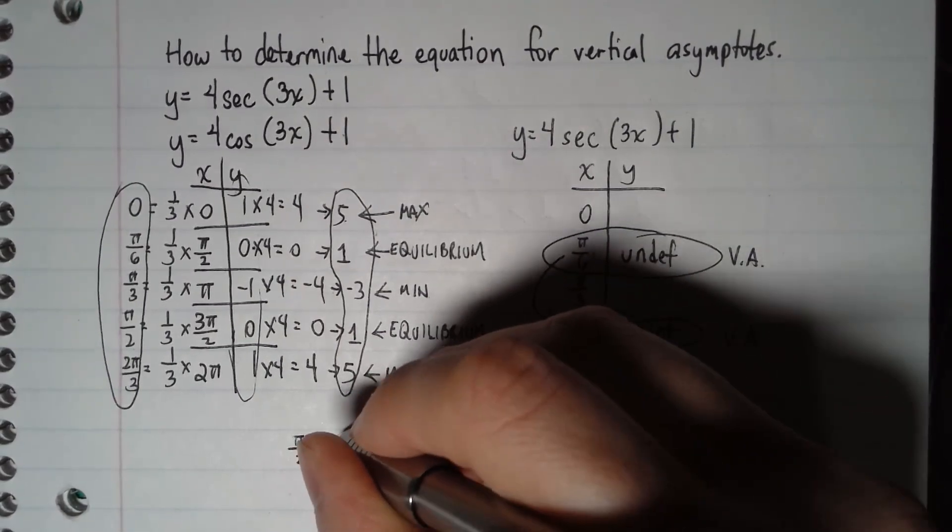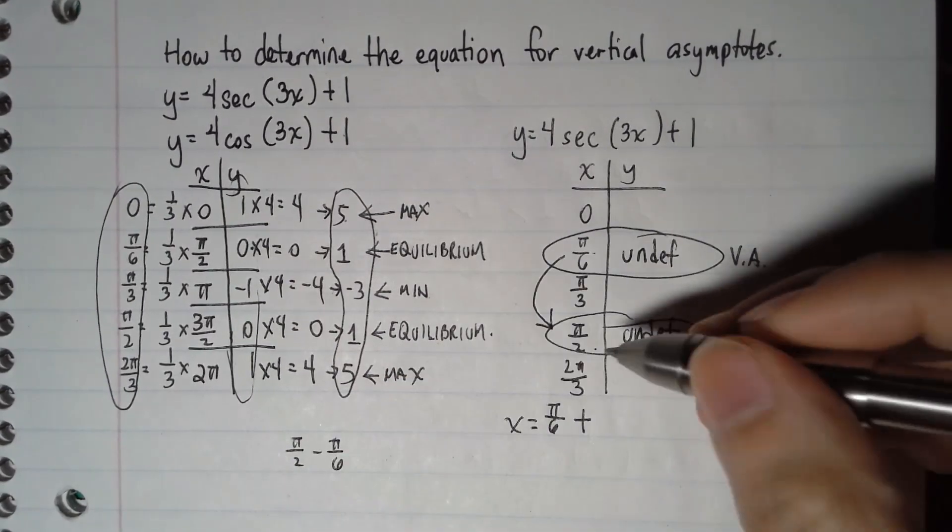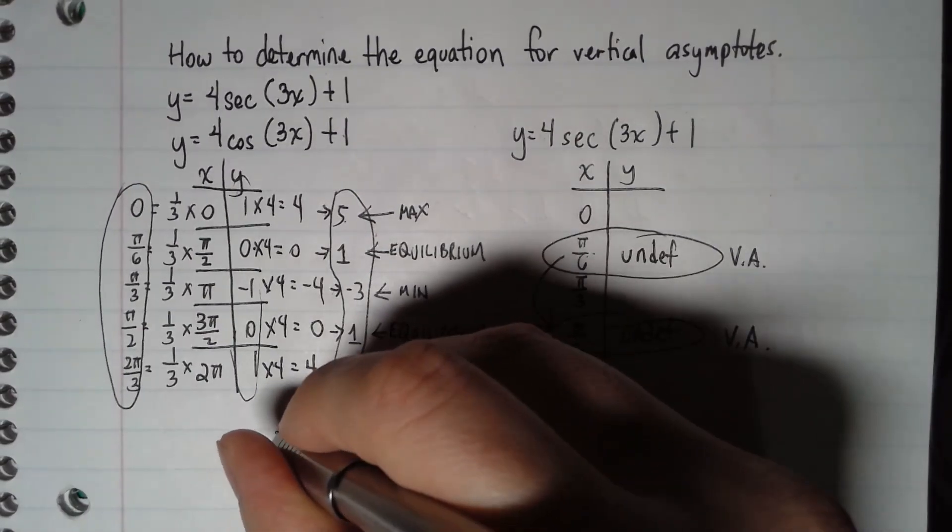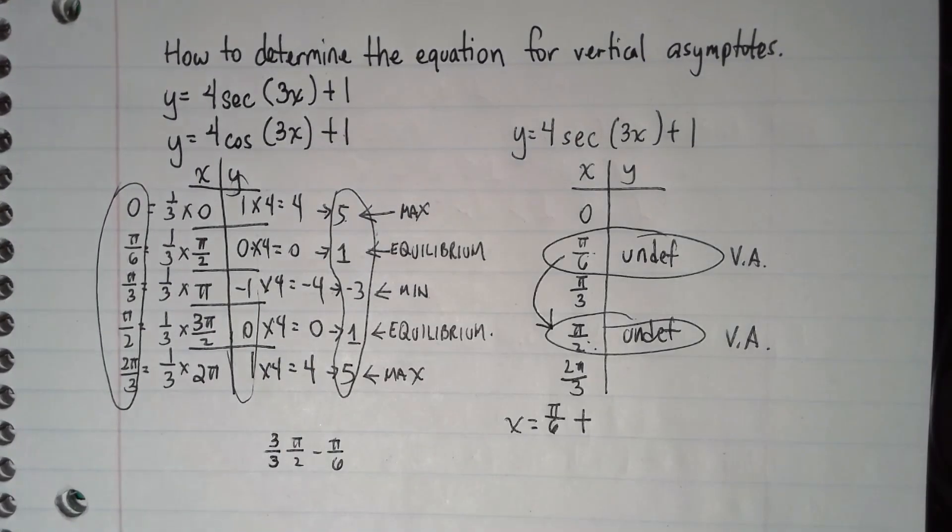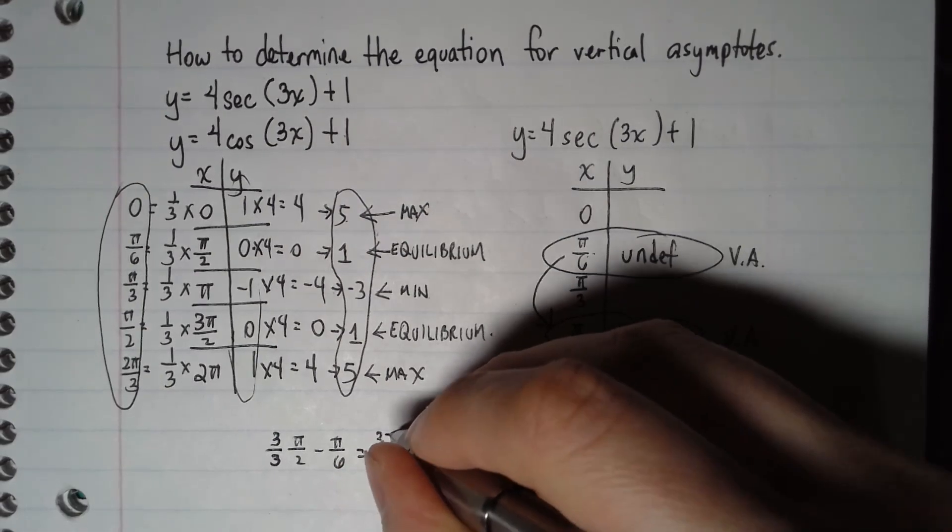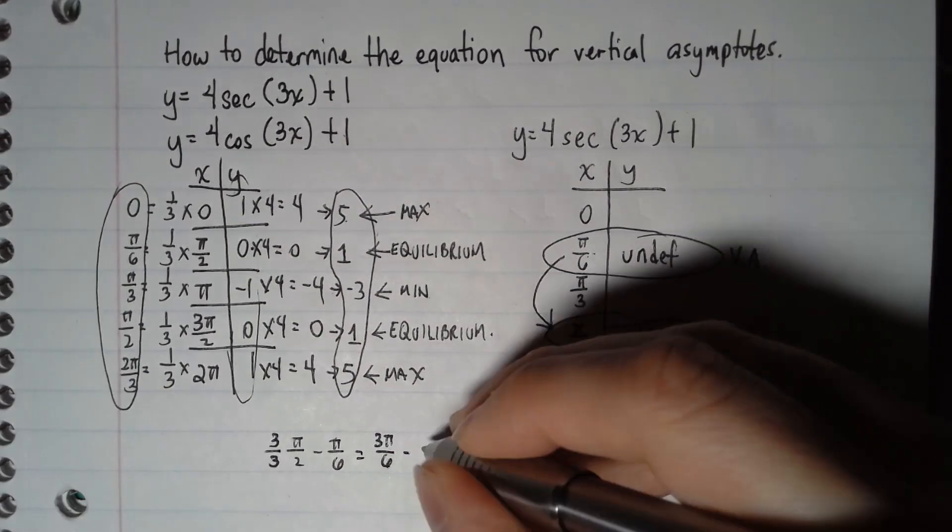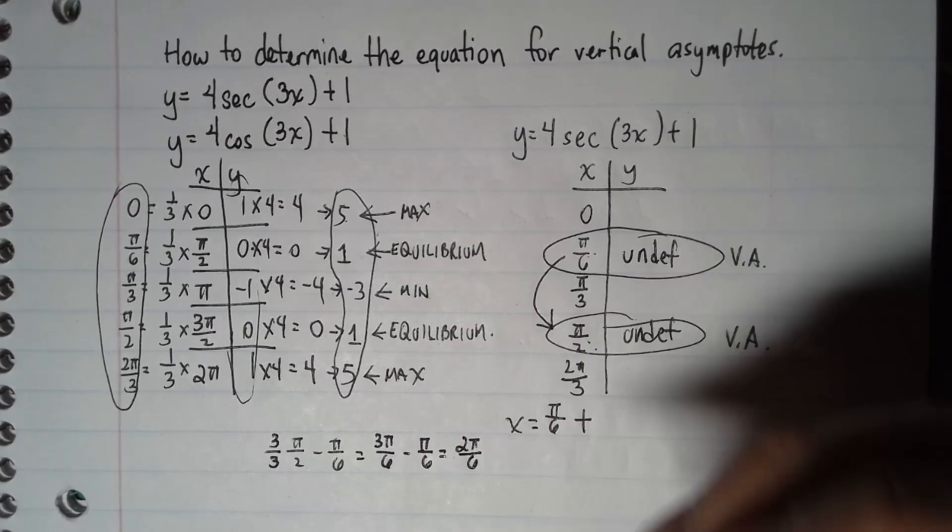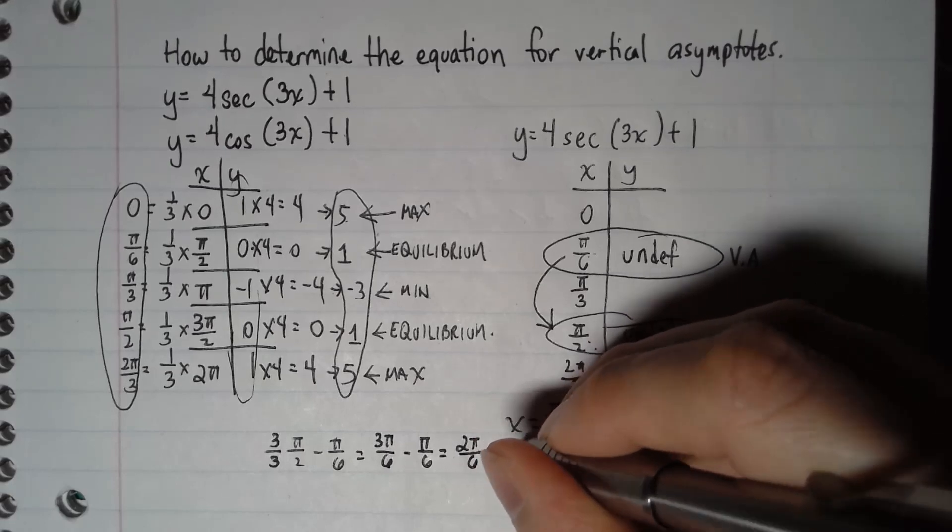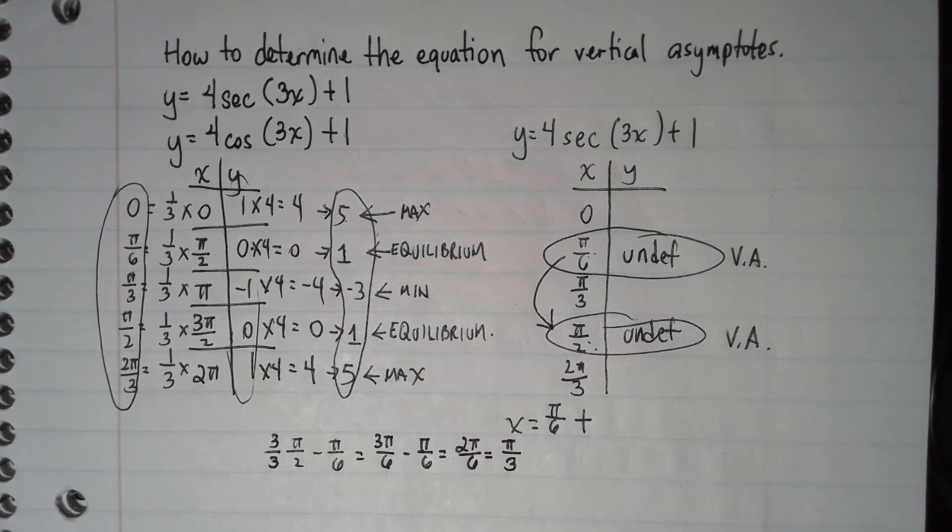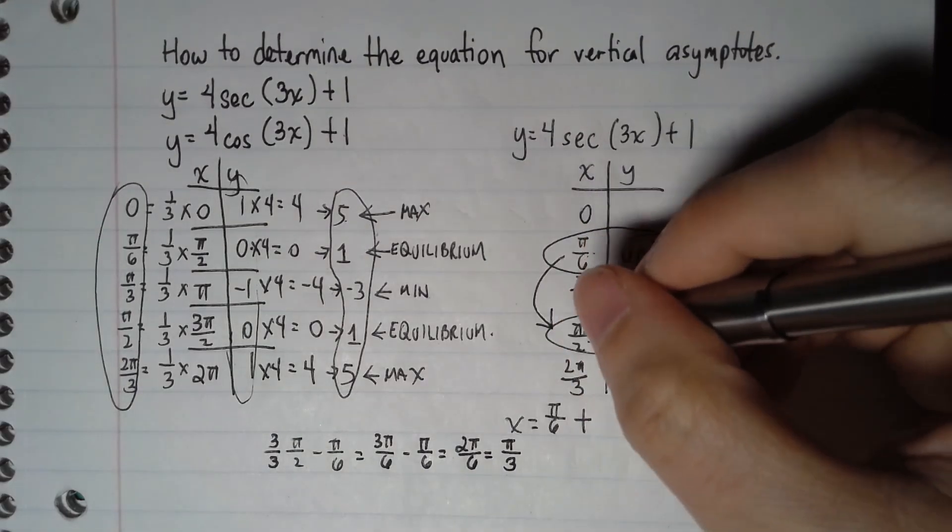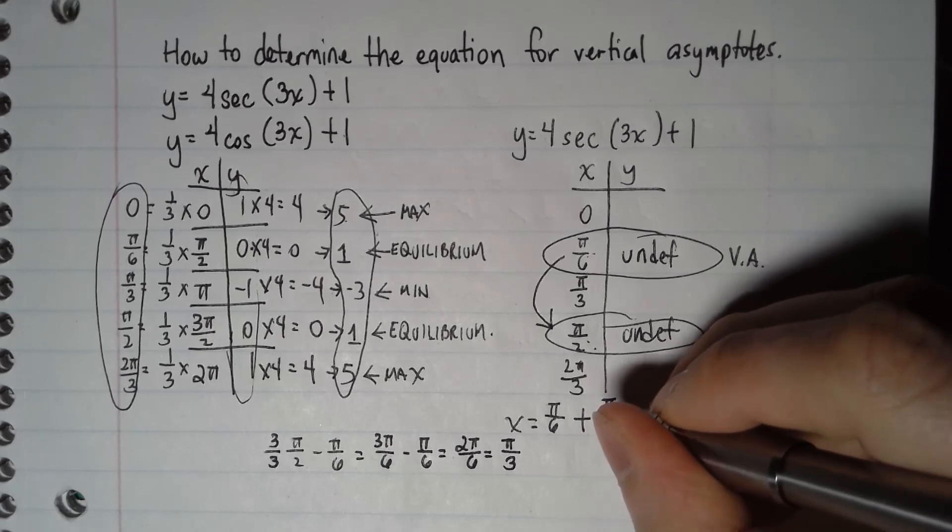π/2 minus π/6. This number minus that number. I cannot subtract unless I have a common denominator, so I'll multiply by 3/3 so that it becomes 3π/6 minus π/6, which is 2π/6. That can be reduced by 2, so it will become π/3. So that's how much I need to add to get from π/6 to π/2. I need to add π/3.